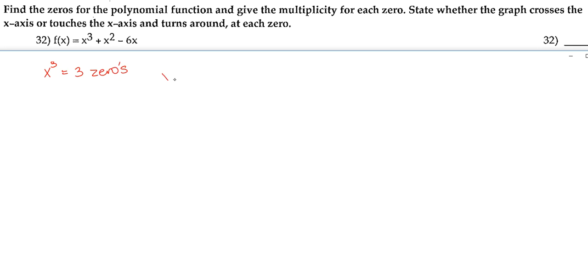In x cubed plus x squared minus 6x, to find these zeros, we're going to have to factor this function, meaning we're going to put it in its most factored form. So the first thing we're going to do is take out the greatest common factor. For this function, it looks like our greatest common factor is x between these three terms. So we're going to take out x and that's going to leave us with x squared plus x minus 6.